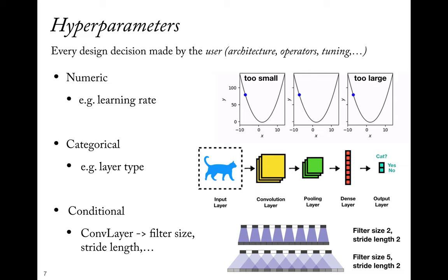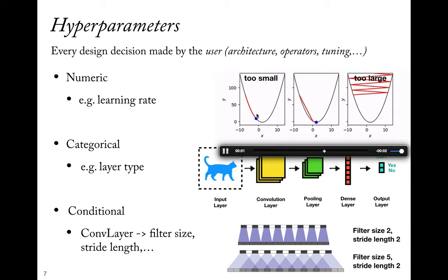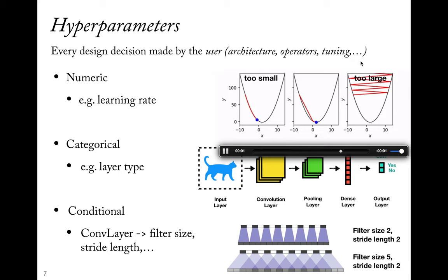When we talk about hyperparameters, we mean every design decision that has to be made by the user. These come in very different forms. Most are numeric, like the learning rate — we know this is very important to tune. If the learning rate is too small, we need many iterations before we find a good solution. If it's optimal, we find a good solution in just a few epochs. If it's too large, we can actually diverge and get increasingly worse performance.